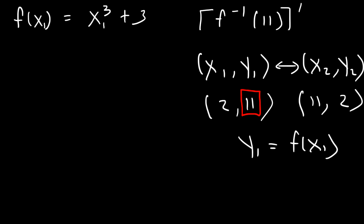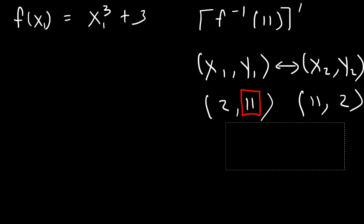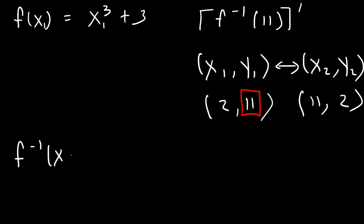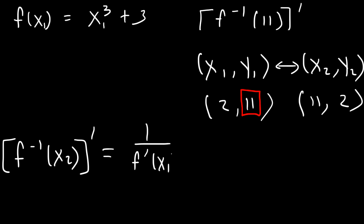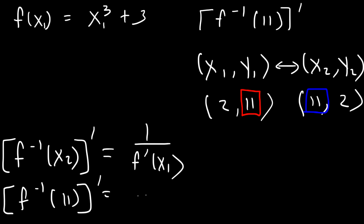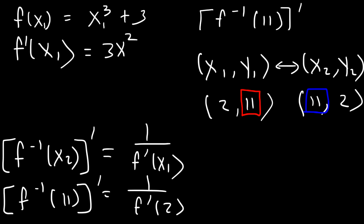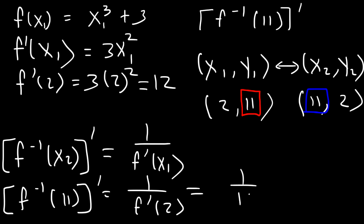Now that we have the value of x1, we can find the derivative of the inverse function. The formula is: the derivative of the inverse function equals 1 over f prime of x sub 1. So x2 is 11 and x1 is 2. f prime of x is 3x squared, so f prime of 2 is 3 times 2 squared, which is 3 times 4, that's 12. So the answer is 1 over 12.